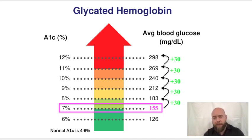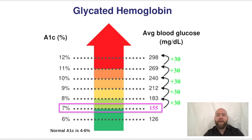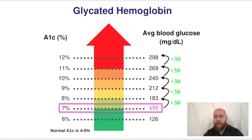For example, you're given a patient in clinic with an A1c of 10. You know that you're going to have to go from 7 to 10, which is 3. That means you're going to add 30 three times to your baseline 155. So you do 3 times 30, which is 90, and then add 90 to 155, which gets you 245. If you look on the chart, a 10% A1c is associated with a 240 blood glucose — it's 5 off, but it gets you close.